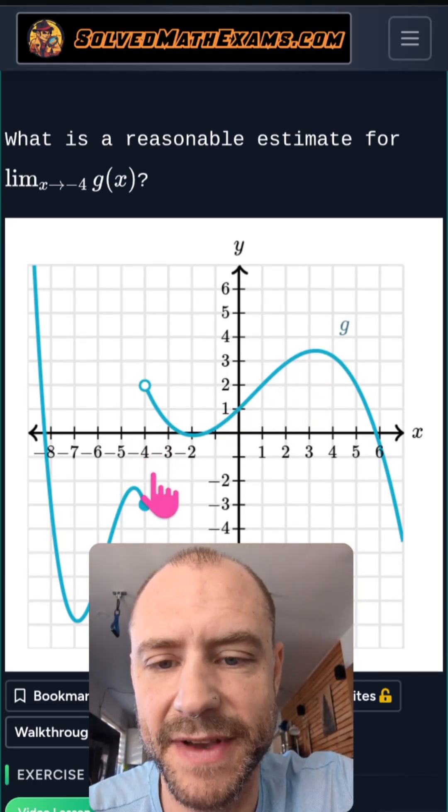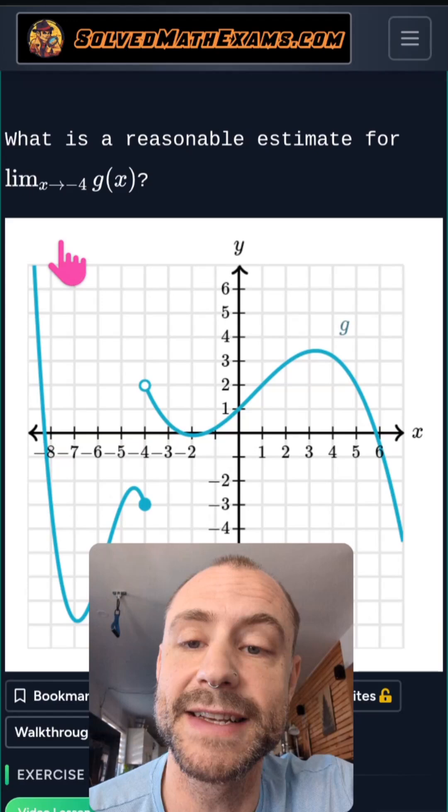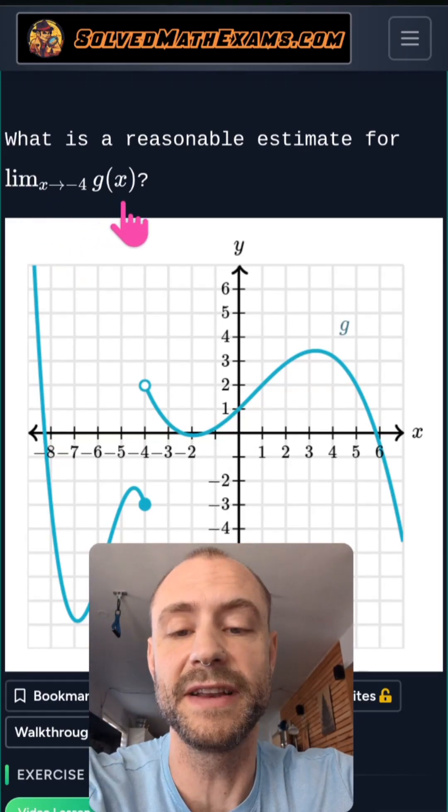And what you can see is we've got a problem here when x is equal to negative 4. So it's kind of interesting to ask what will happen for this limit.